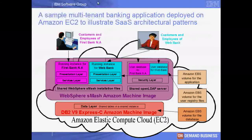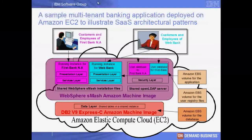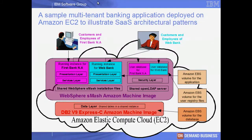We show how this multi-tenant banking application can share its components and deployment infrastructure between customers and employees of two fictitious tenant banks, FirstBank and WebBank. The sample application includes a user interface layer and a services layer which run in separate runtime instances of WebSphere SMASH for each bank.